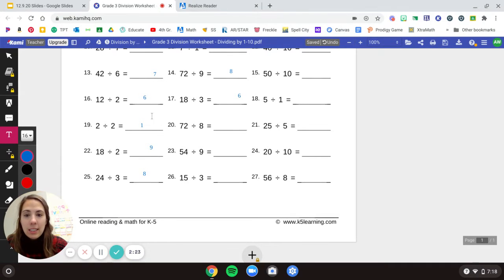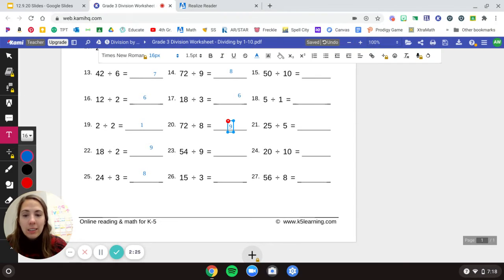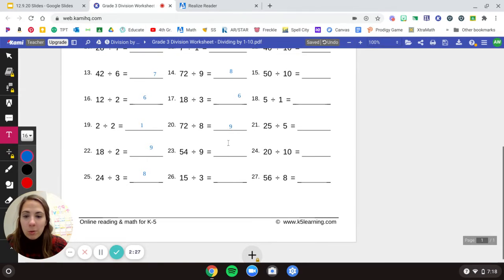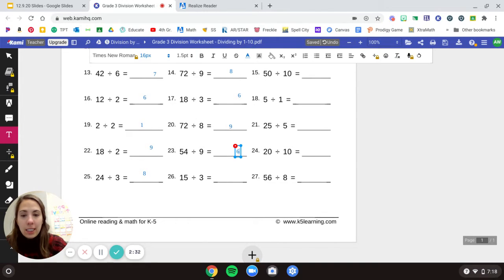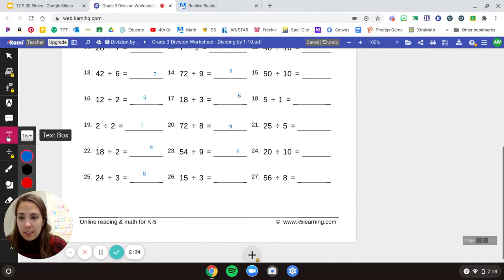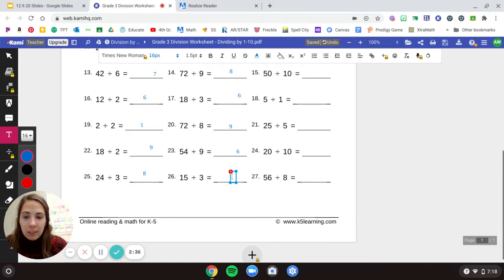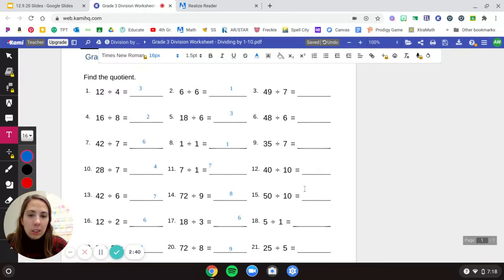54 divided by 9 is 6. And we got 15 divided by 3 is 5. One last column.